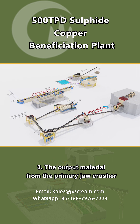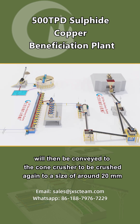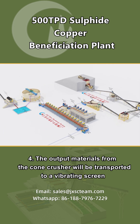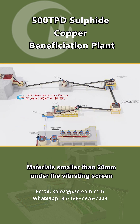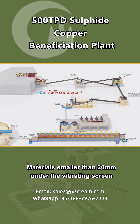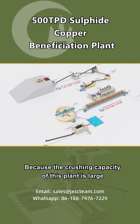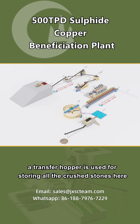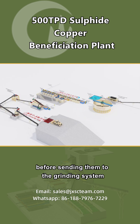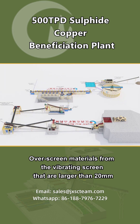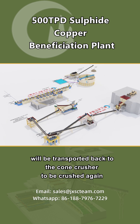The output material from the primary jaw crusher will then be conveyed to the cone crusher to be crushed again to a size of around 20 millimeters. The output materials from the cone crusher will be transported to a vibrating screen. Materials smaller than 20 millimeters will be sent to the transfer hopper for transfer and buffering. Because the crushing capacity of this plant is large, a transfer hopper is used for storing all the crushed stones before sending them to the grinding system. Over-screen materials larger than 20 millimeters will be transported back to the cone crusher to be crushed again.